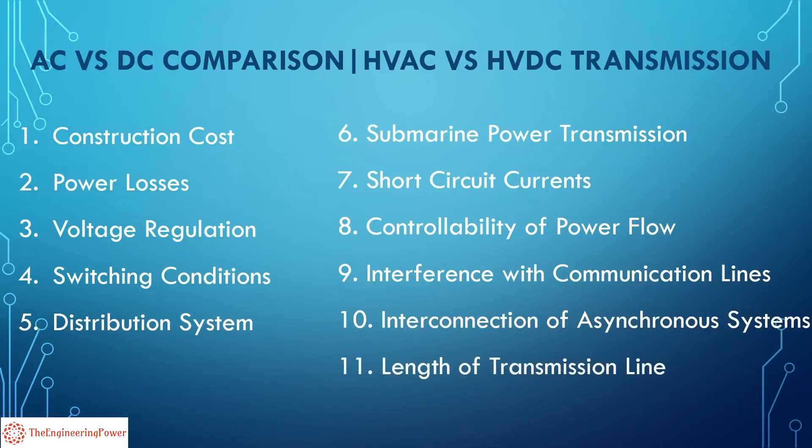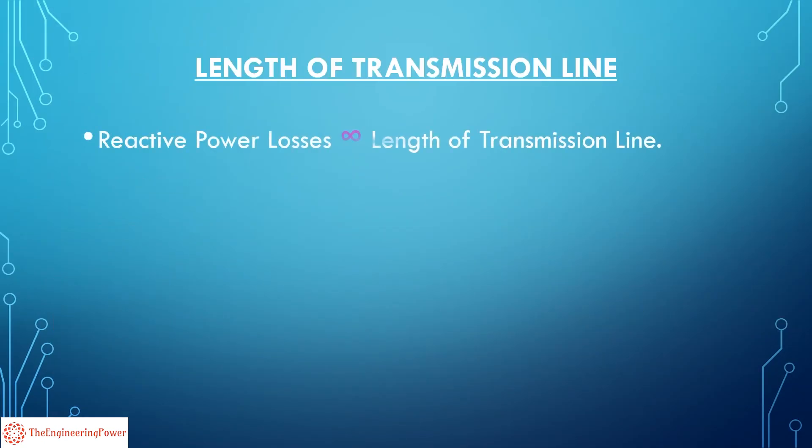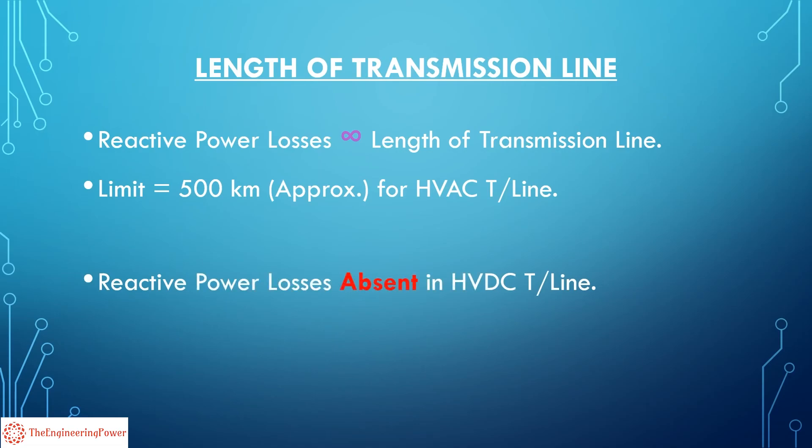Length of transmission line. We know that reactive power losses in a transmission line are directly related to the length of transmission line. Due to this reason, the length of HVAC transmission lines cannot be increased beyond a certain limit as reactive power losses will be too much high. This limit is generally around 500 km. On the other hand, due to the absence of inductance and capacitance, reactive power losses are absent in HVDC transmission line. That's why there is no limitation on length of HVDC transmission lines.